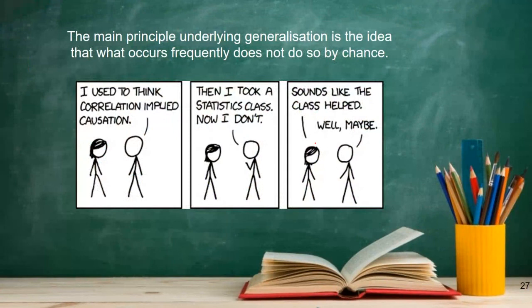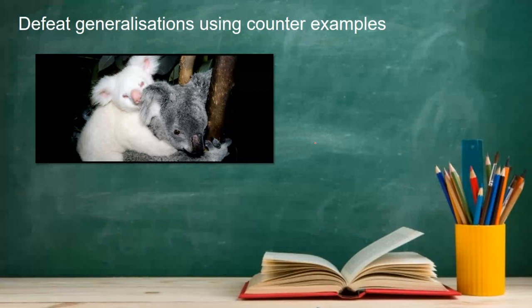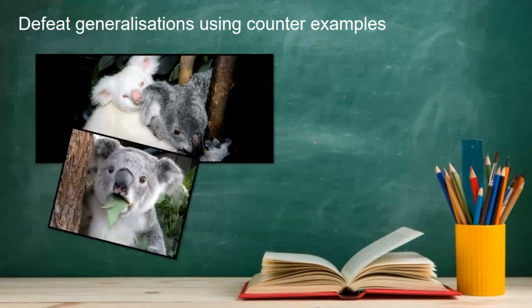The main principle underlying a generalization is the idea that what occurs frequently does not do so by chance — it's pattern detection, and it's the way we get through life. There's another video in here from Peter's MOOC talking about generalizations that's very good — highly recommended. The way to defeat a generalization is by using a counterexample — if I find my little albino koala, that defeats my generalization.